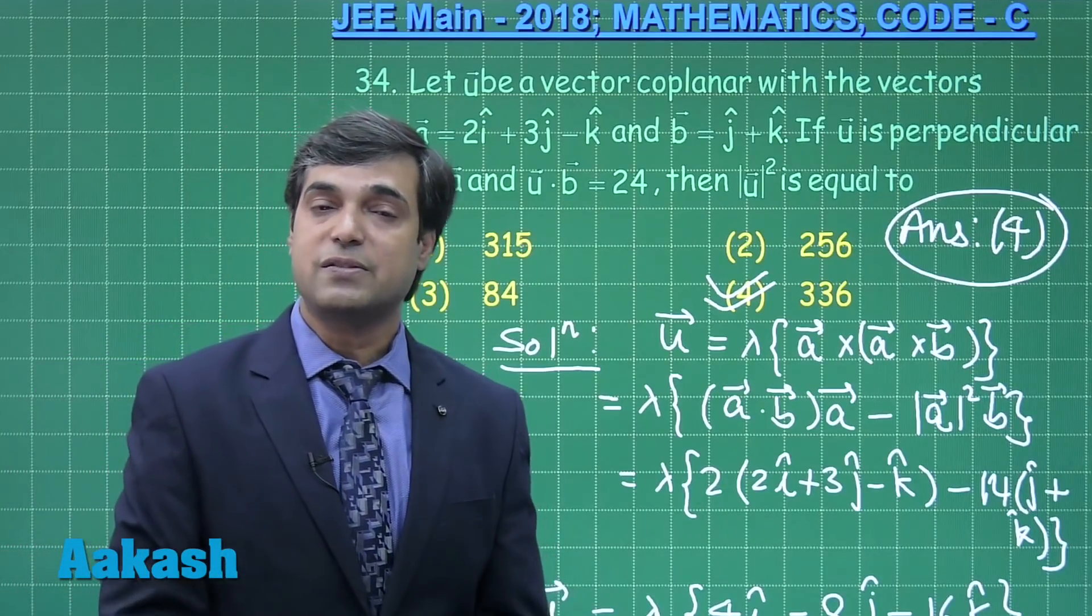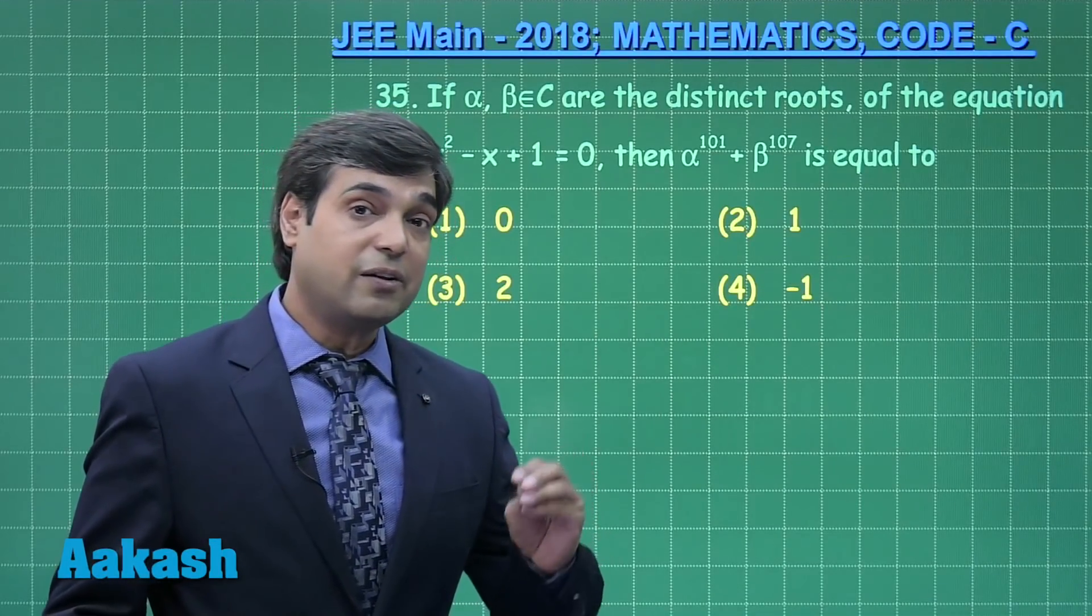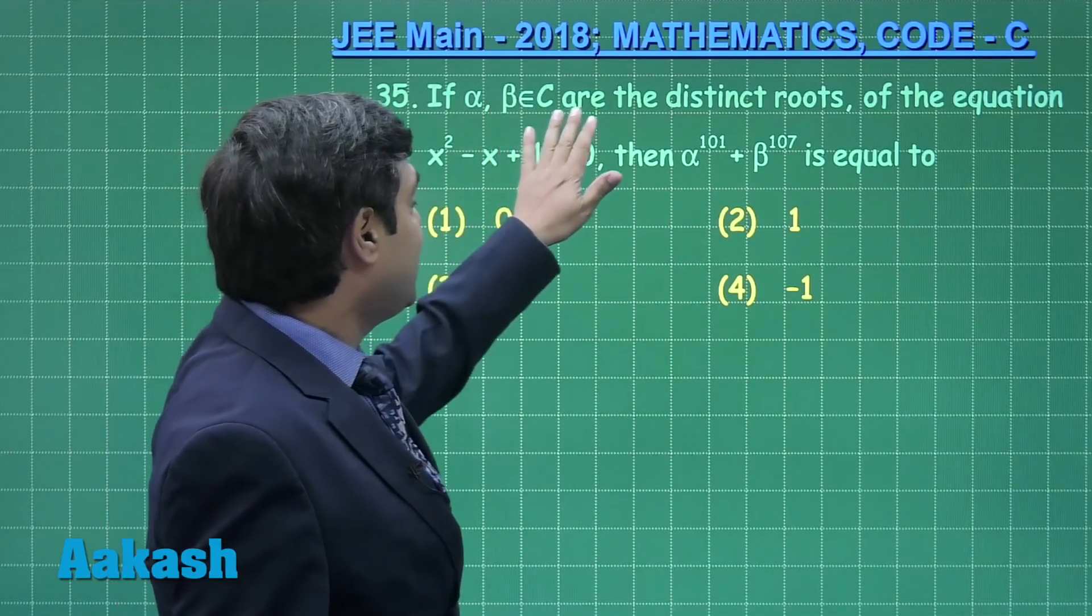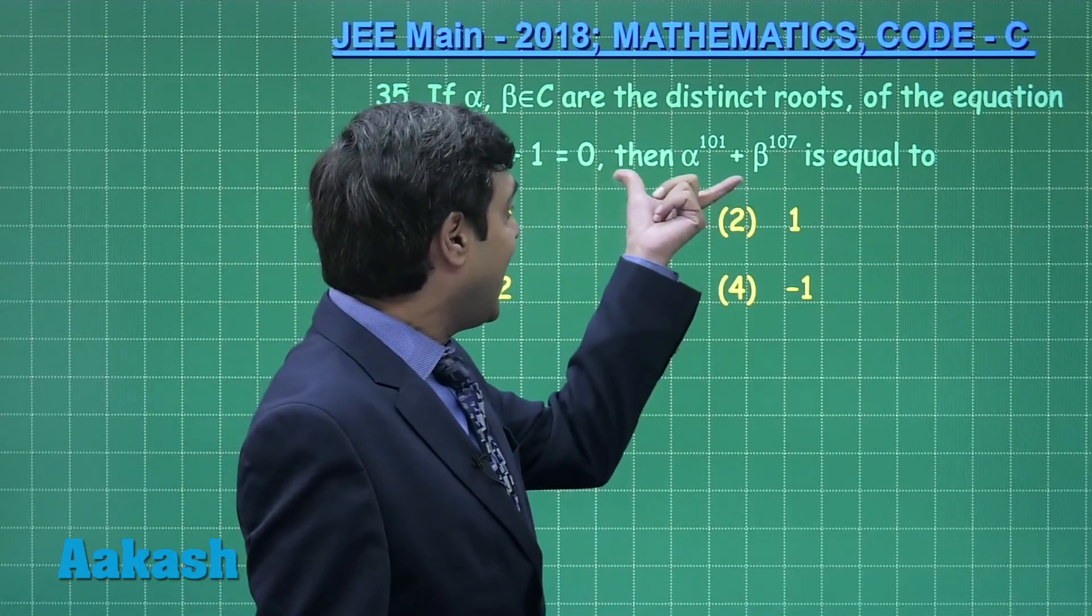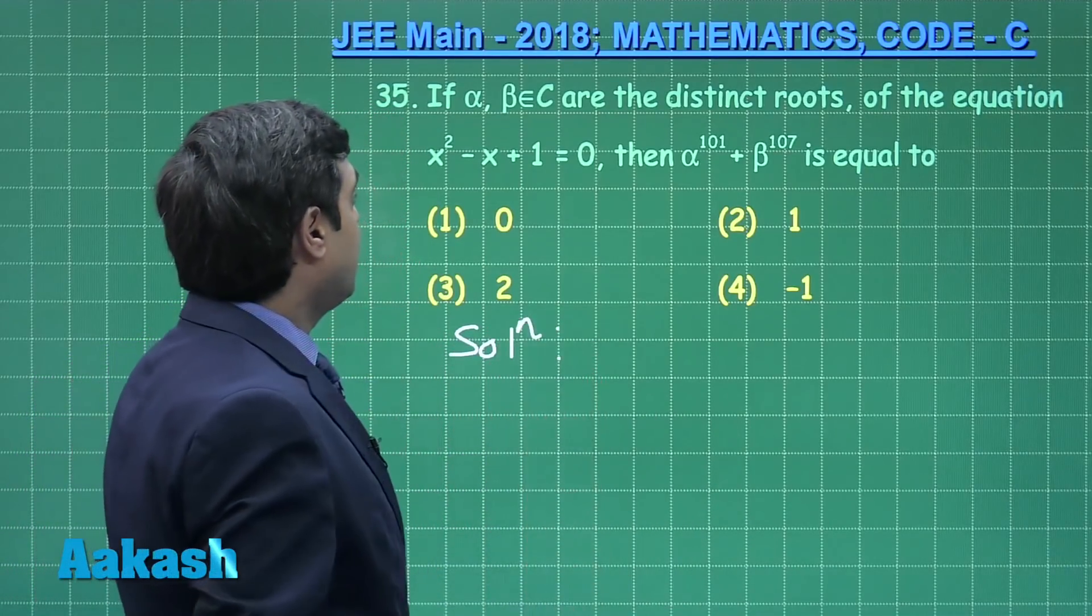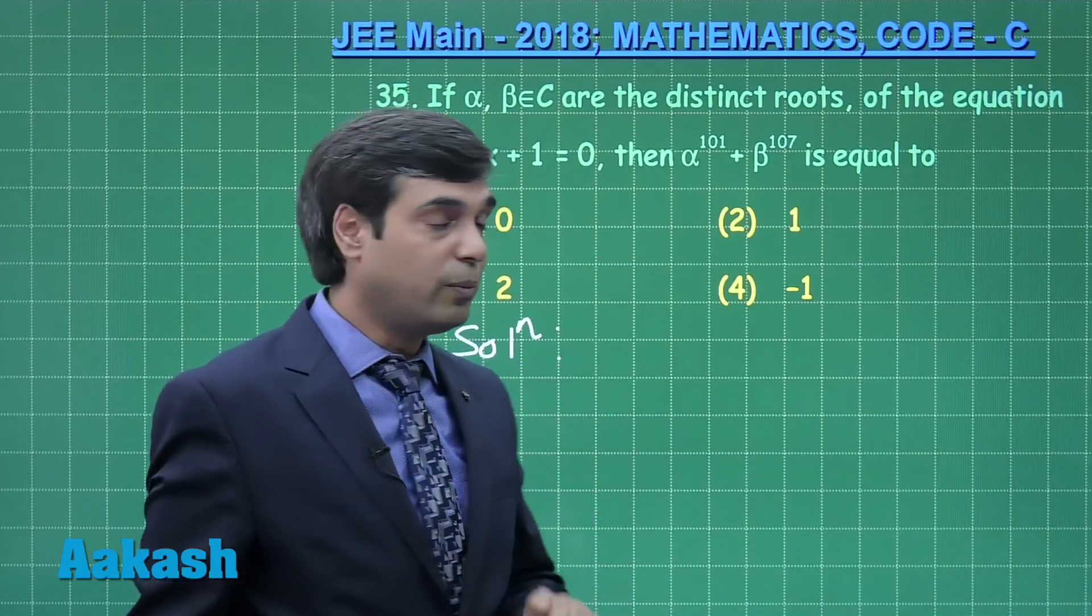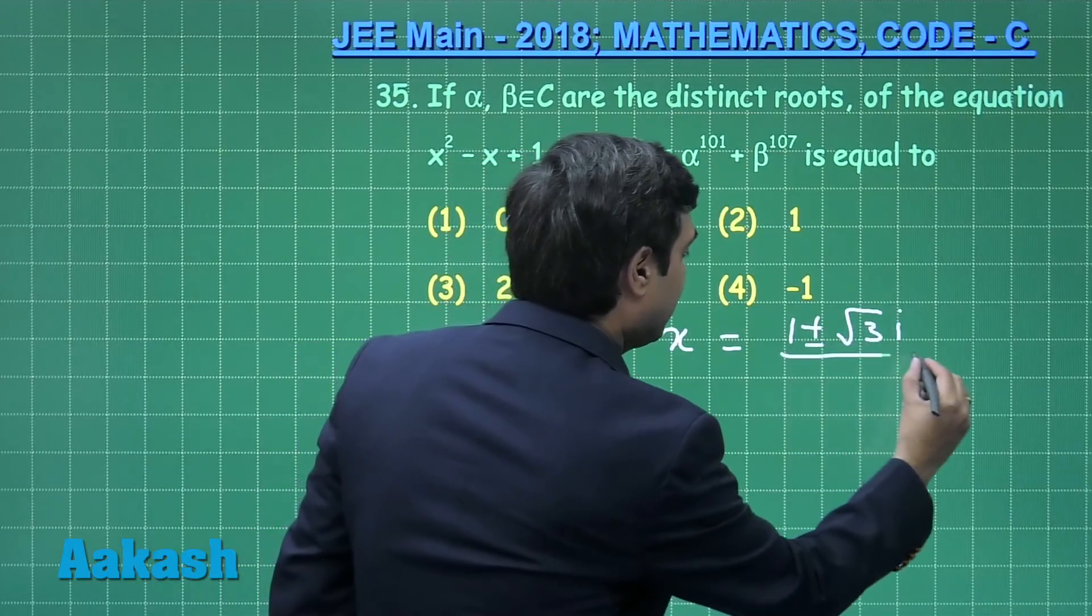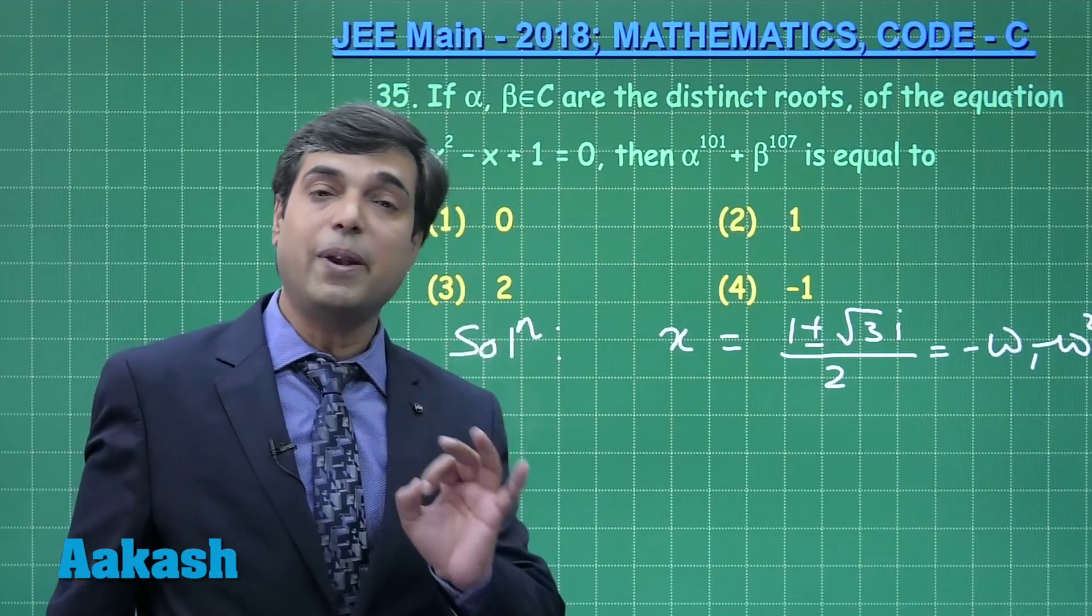Now question number 35, a simple question from complex number as well as quadratic. Alpha and beta are the distinct roots of the equation x square minus x plus 1 equals 0. Then alpha to the power 101 plus beta to the power 107 is. X square minus x plus 1 equals 0. What are the roots of this equation? Simply minus omega and minus omega square. We can write it as 1 plus minus root 3 i divided by 2. This is minus omega and minus omega square, where omega is the complex cube root of unity.